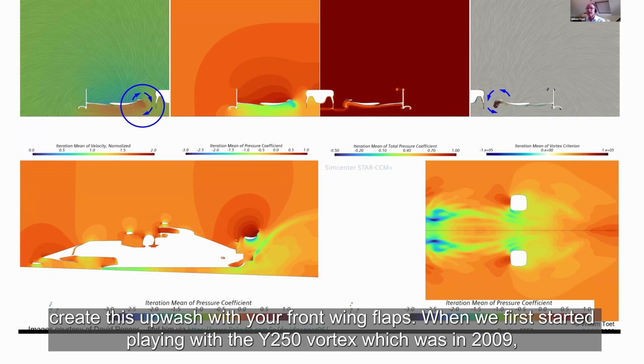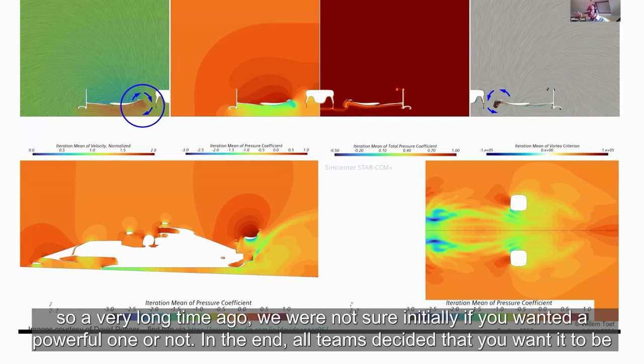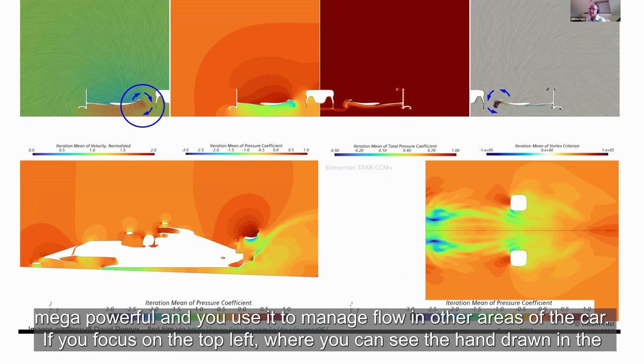When we first started playing with the Y250 Vortex, which was in 2009, we were not sure initially if you wanted a powerful one or not. In the end all teams decided it wants to be mega powerful and you use it to manage flow in other areas of the car.